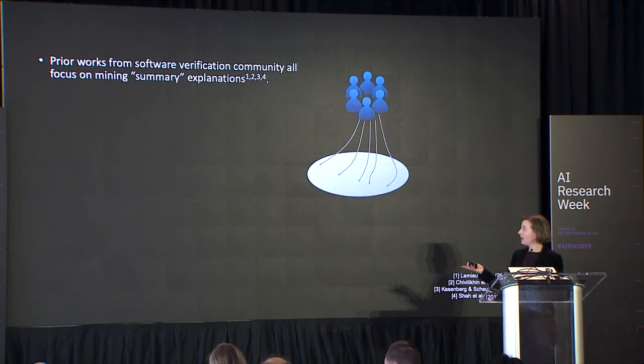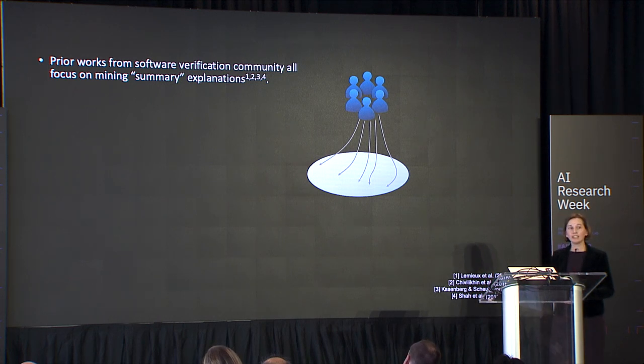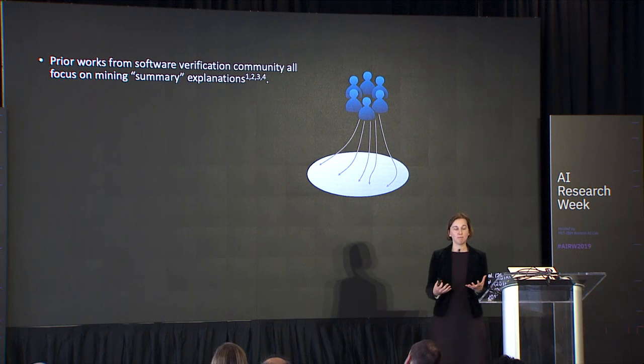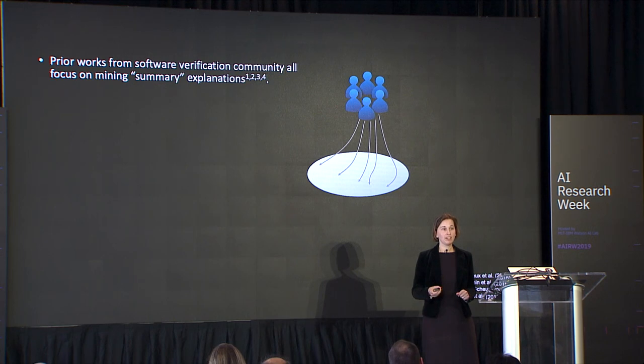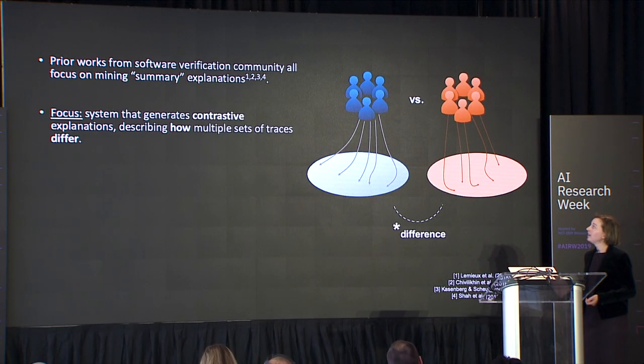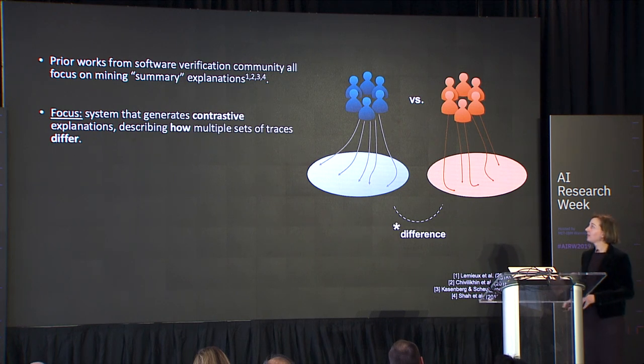In our recent work with IBM Watson, we've been looking at how humans learn effectively through pairwise comparisons and enabling machines to present back to us what they learn about differences in different sets of data. For example, in the cockpit you can imagine different communication patterns — some which contribute to high workload and some which work effectively. You'd want the system to potentially provide a contrastive explanation back to those pilots to improve their ability to learn, train, and effectively fly together. Our aim is different from prior work in software verification that focused on mining summary explanations — we want to generate contrastive explanations describing how multiple traces differ from each other.